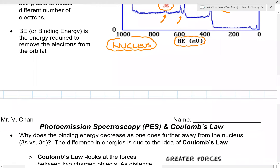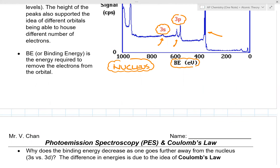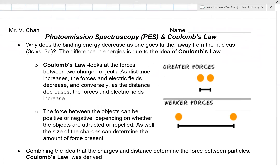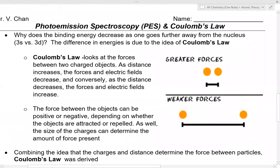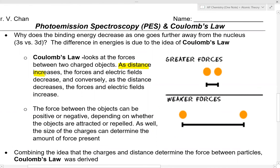Binding energy decreases as one gets further from the nucleus. The difference in energies is due to Coulomb's law. Coulomb's law looks at the forces between two charged objects: as distance increases, forces and electric fields decrease; as distance decreases, forces increase. There's an inverse relationship between distance and force — the bigger the distance, the weaker the force.